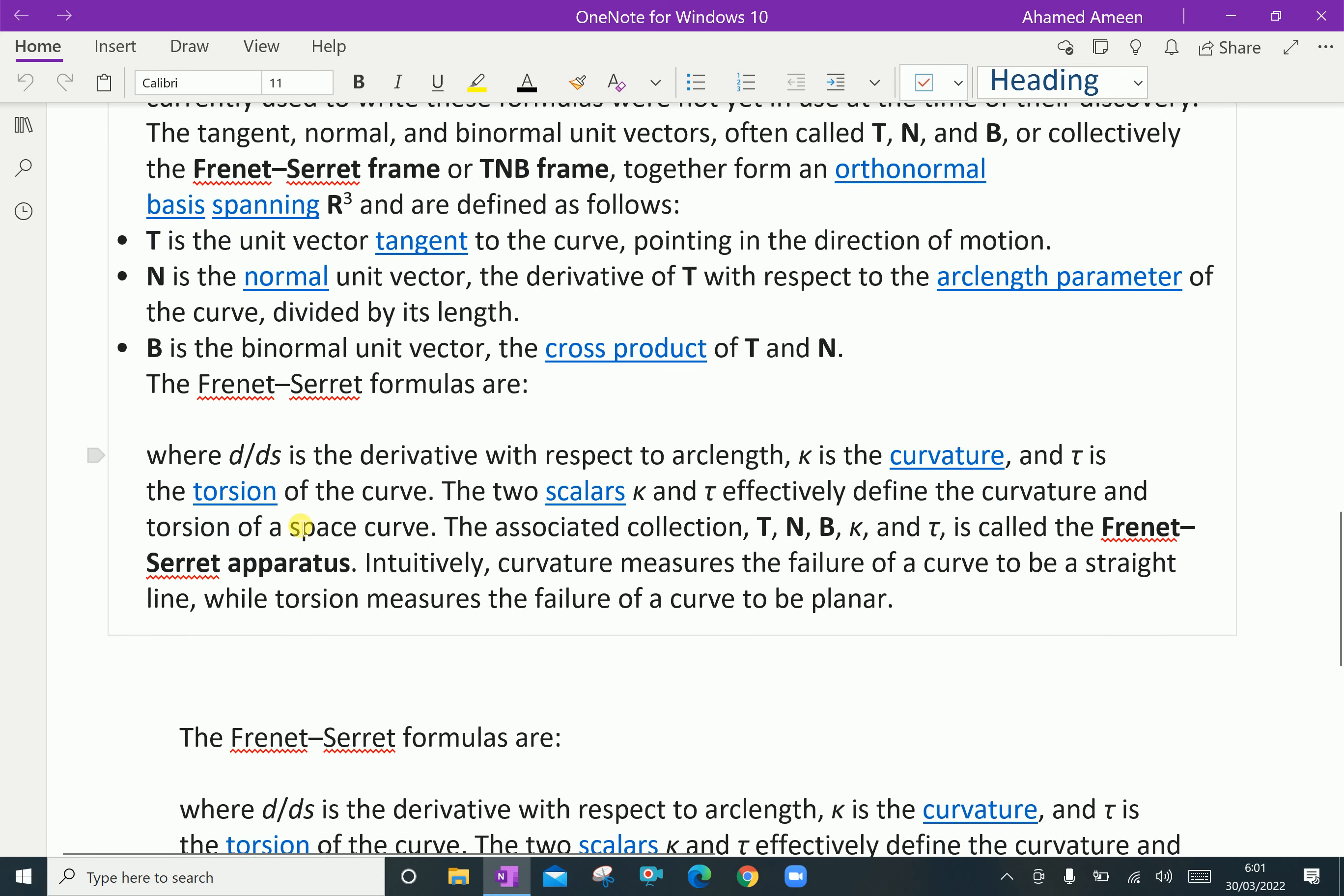Where d/ds is the derivative with respect to arc length, κ (kappa) is the curvature, and τ (tau) is the torsion of the space curve. The two scalars κ and τ effectively define the curvature and torsion of a space curve. The associated collection T, N, B, κ and τ is called the Frenet-Serret apparatus.